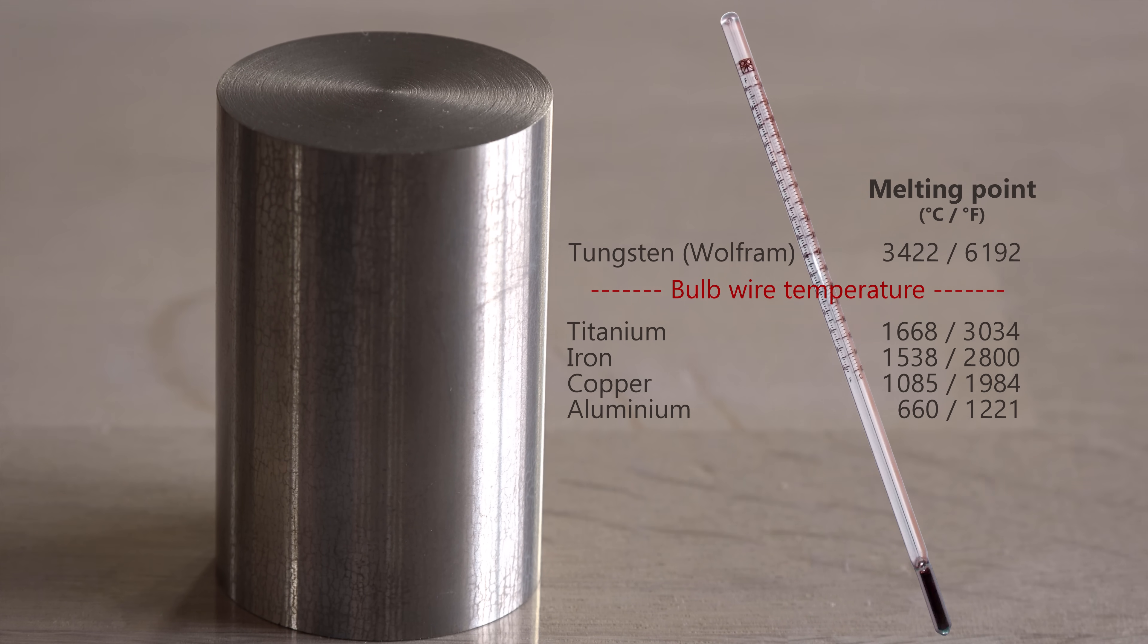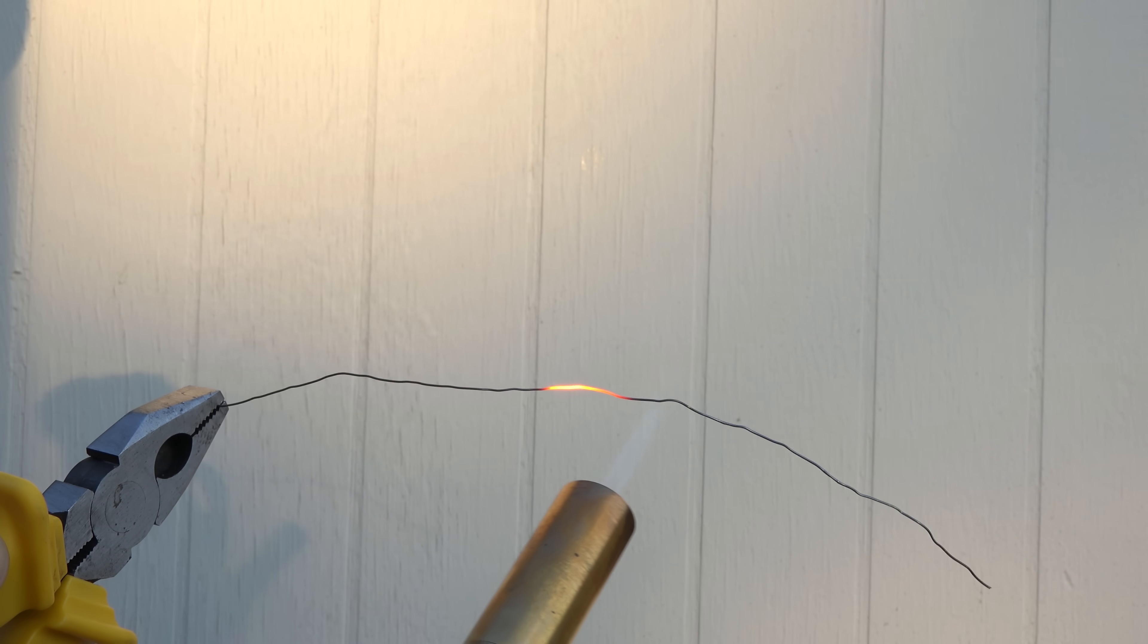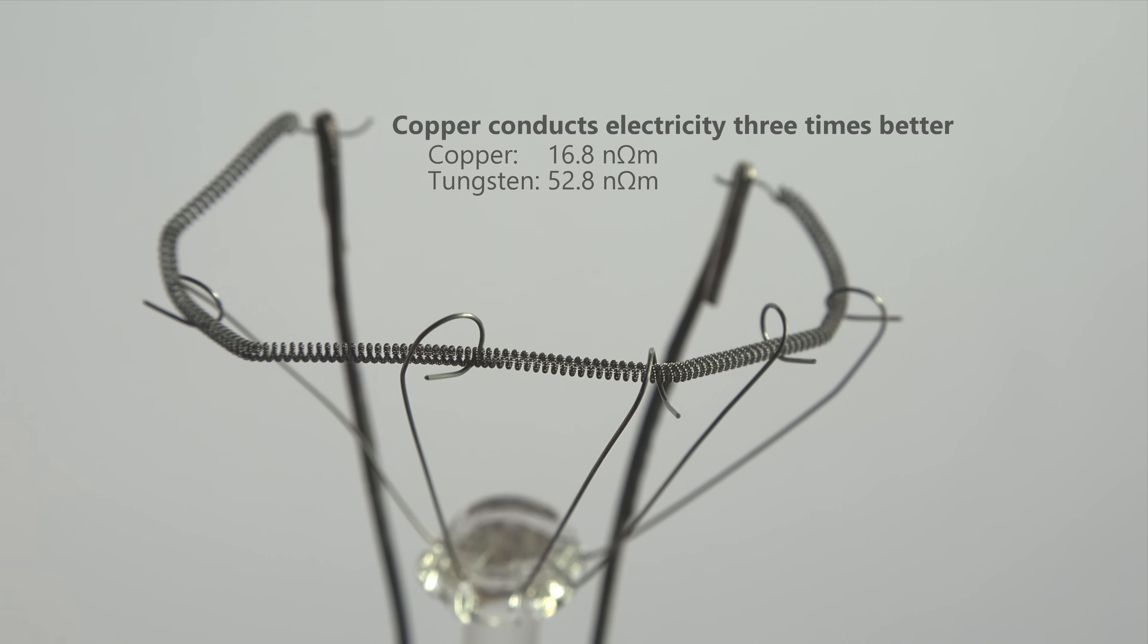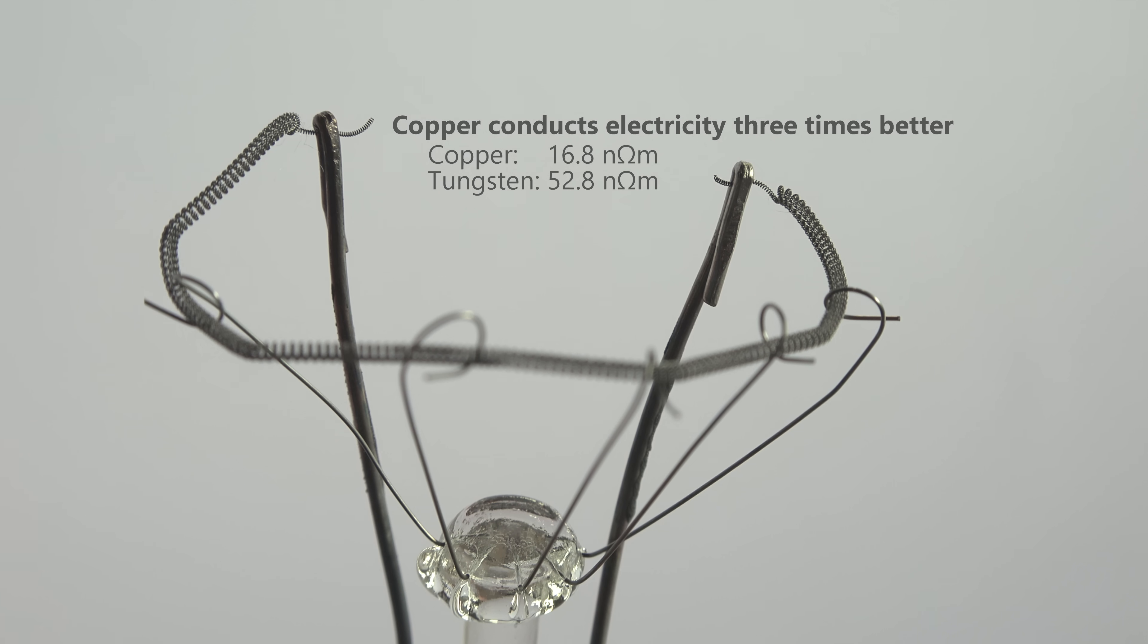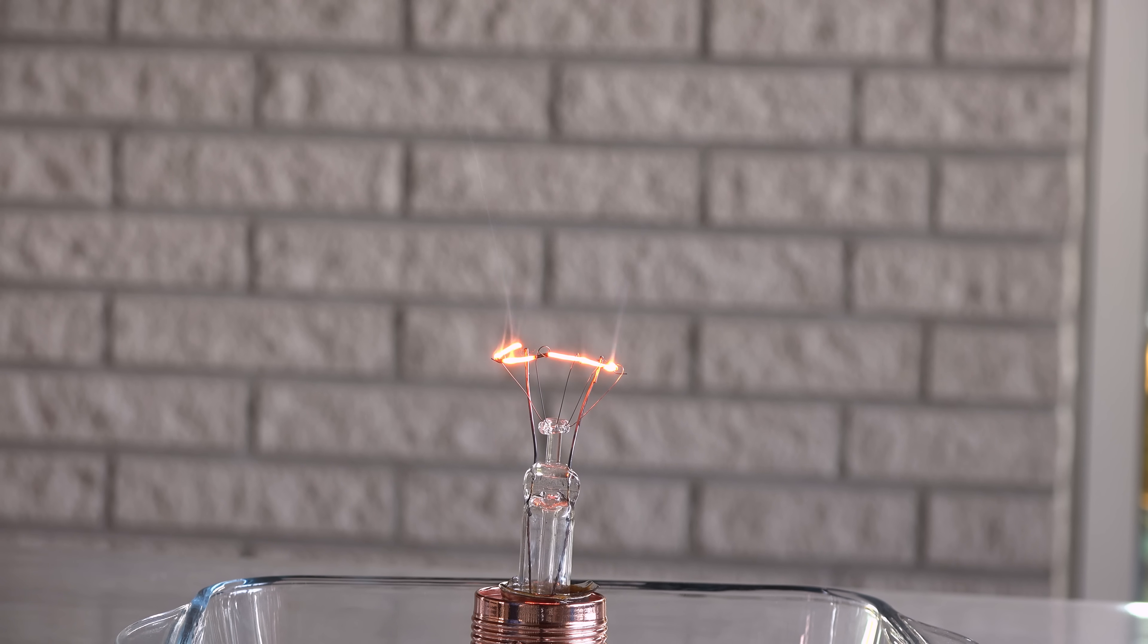But where does the heat come from? There's no flame inside the bulb. Tungsten isn't the best conductor and the wire is also very thin so it has the highest resistance in the electrical circuit. The filament wire is therefore a resistor and its resistance causes friction for the electrons passing through it. This friction generates heat like when you rub your hands against each other.